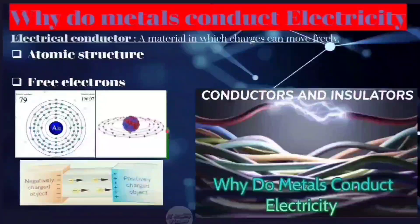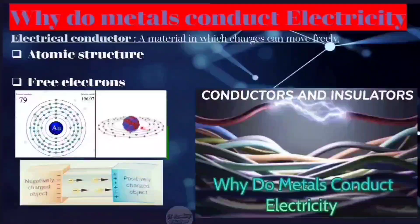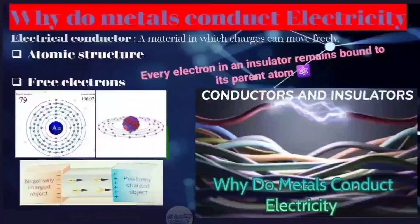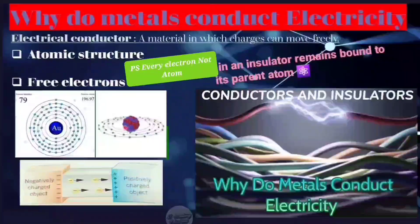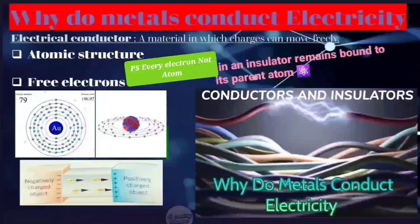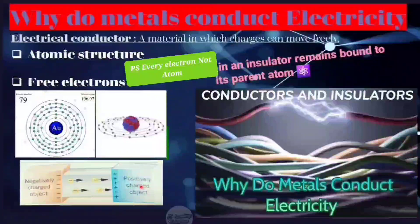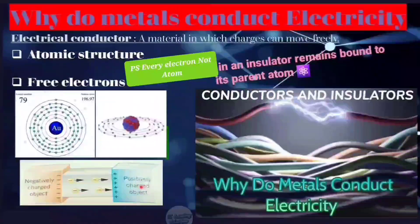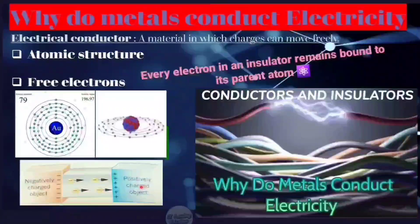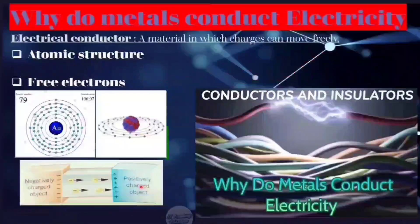Whereas, in an insulator, as already discussed, there are very few free electrons to move. Hence, more or less every atom in an insulator remains bound to its parent atom. Therefore, there is very little flow of charge when an insulator is placed between two oppositely charged bodies. The promptness and ready movement of electrons in metals is a distinctive feature of a good conductor.